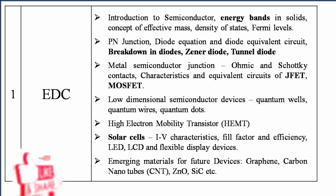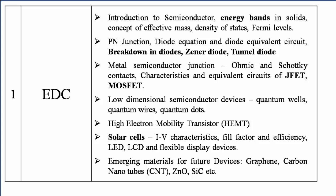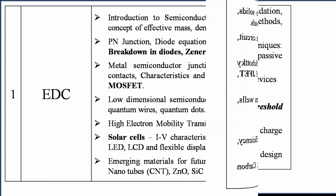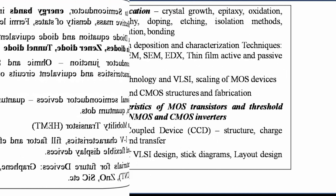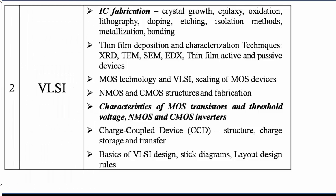When will a transistor be in linear region and when will it be in saturation region? Is the threshold voltage positive or negative? You need to differentiate photodiode from solar cell — what are the applications of each, the basic working principles, and the formulas — that is very very important.